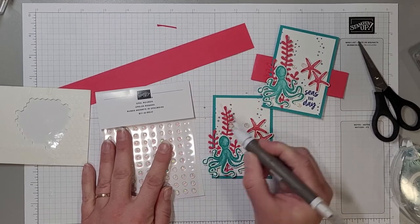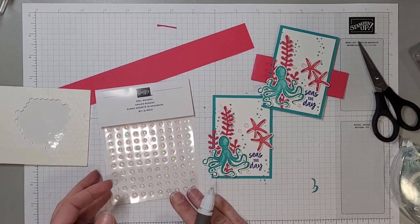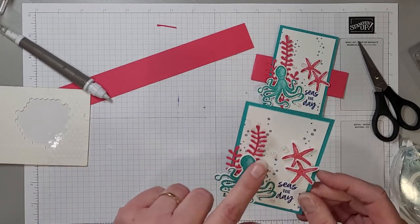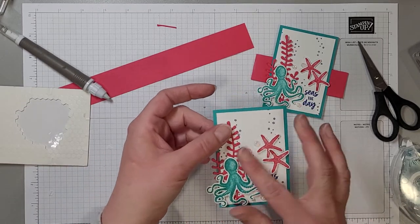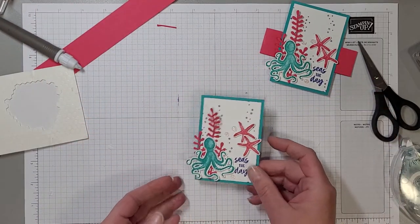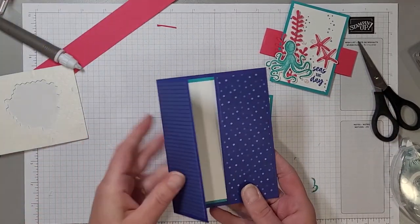So we'll just go ahead and add a few of those. I'm thinking three is probably lots on there, just gives that little bit of sparkle and bling and they have that nice opaly look for the sea, it's perfect. All right so that's created, our gatefold part of our card is created.